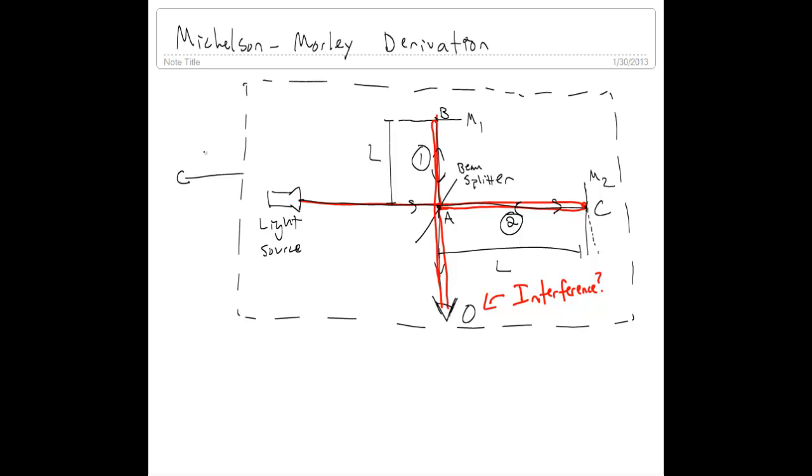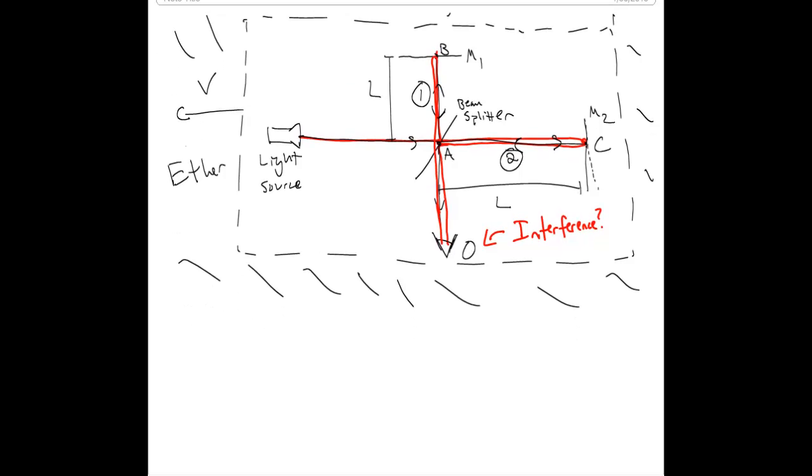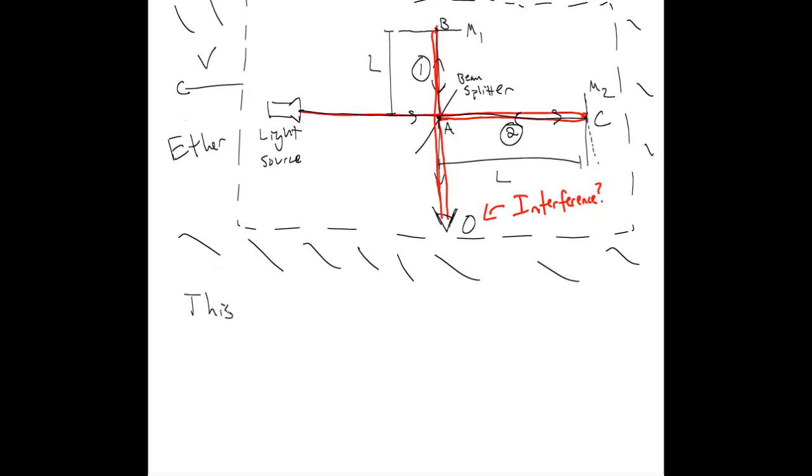Let's say the Earth is moving through the ether in that direction. So out here is this mysterious ether. And because light is supposed to travel through the ether, like waves travel through water, then light traveling in one direction along the ether will travel at a different speed than light traveling along the perpendicular direction.